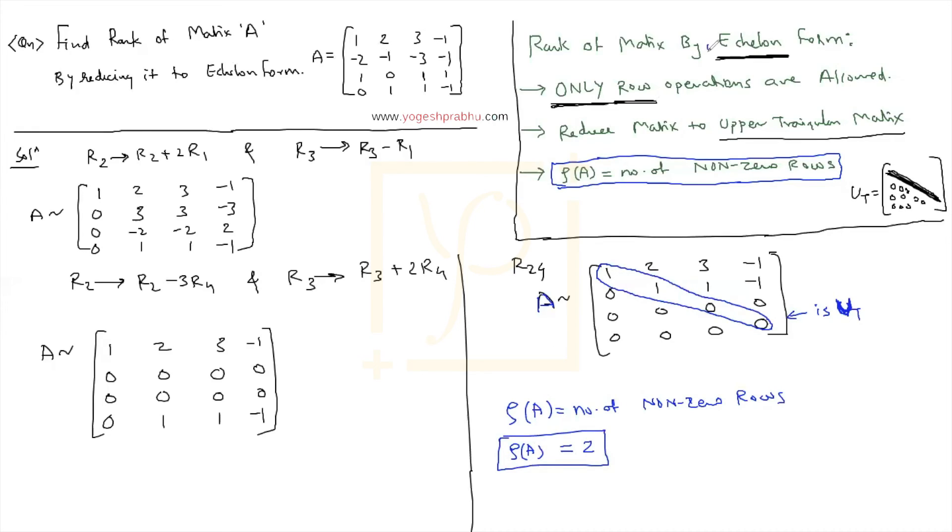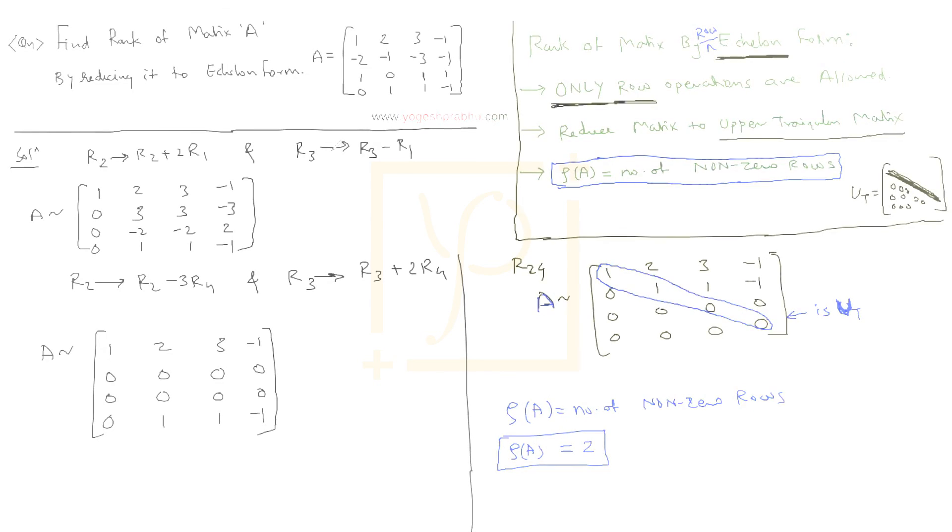And that is how the echelon form is going to be. Or sometimes even this is called as a row echelon form. I'm sure you can guess why, because we are only using row operations. So you can also call this a row echelon form. And this is a default method. If in exam they did not mention any of the method, you should use echelon form because it's the easiest method.